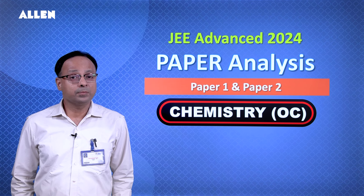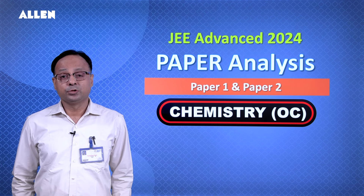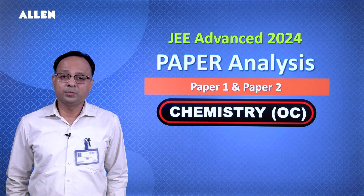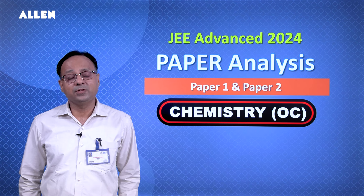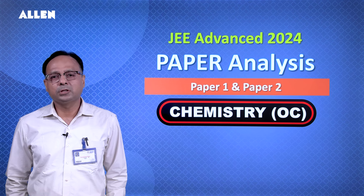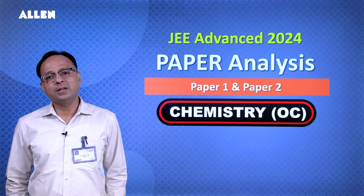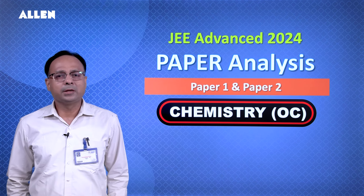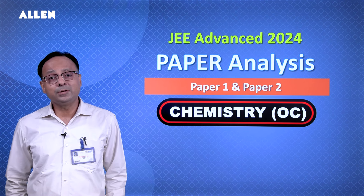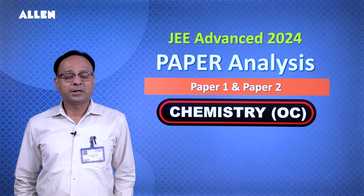Polymers, which are not in the JEE mains syllabus, had questions here. Chemistry in everyday life — also not in mains syllabus — had two questions: one on soap (calculation-based) and one on aspartame, an artificial sweetener. Acid derivatives had fewer questions as it's a small topic. Surprisingly, SN reactions — substitution and elimination — had no questions. Grignard reagent had a question. The paper was mainly mechanism-oriented and reagent-based, and calculations increased the difficulty.